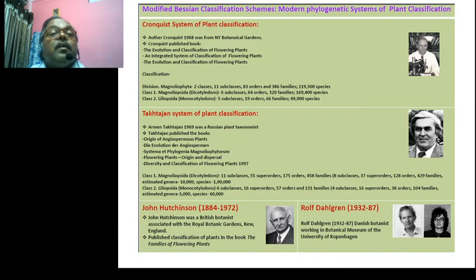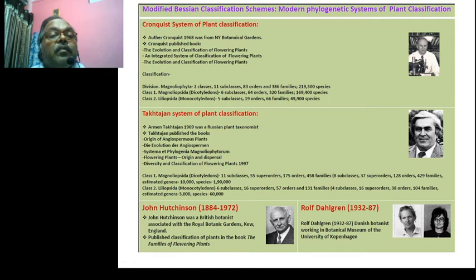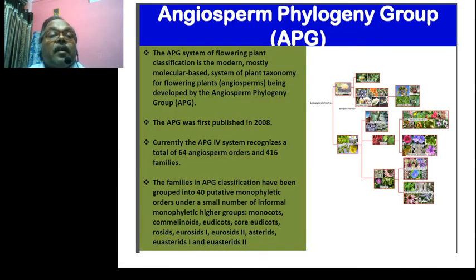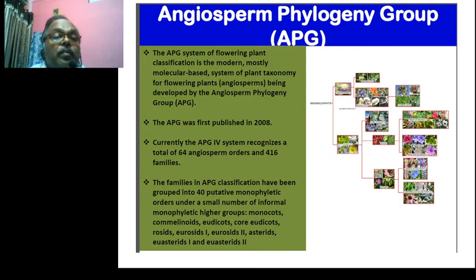This is called evolution — evolutionary classification of modern plants. They have given this classification. Then Takhtajan and Hutchinson classification, and Dahlgren classification has also been given. The APG system of flowering plants classification is the modern and most molecular-based system of plant taxonomy of flowering plants, being developed by the Angiosperm Phylogeny Group, first published in 2008.